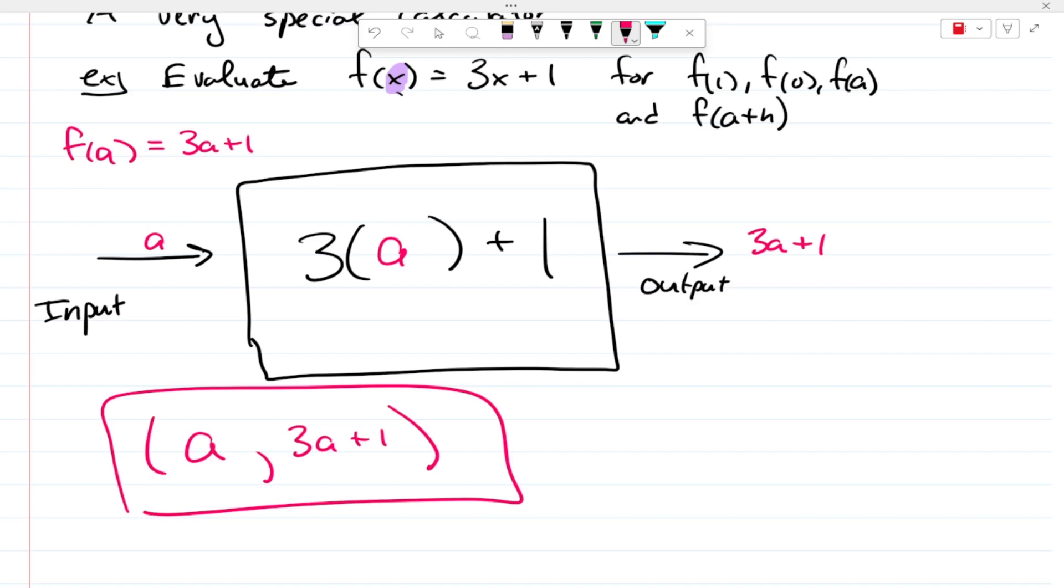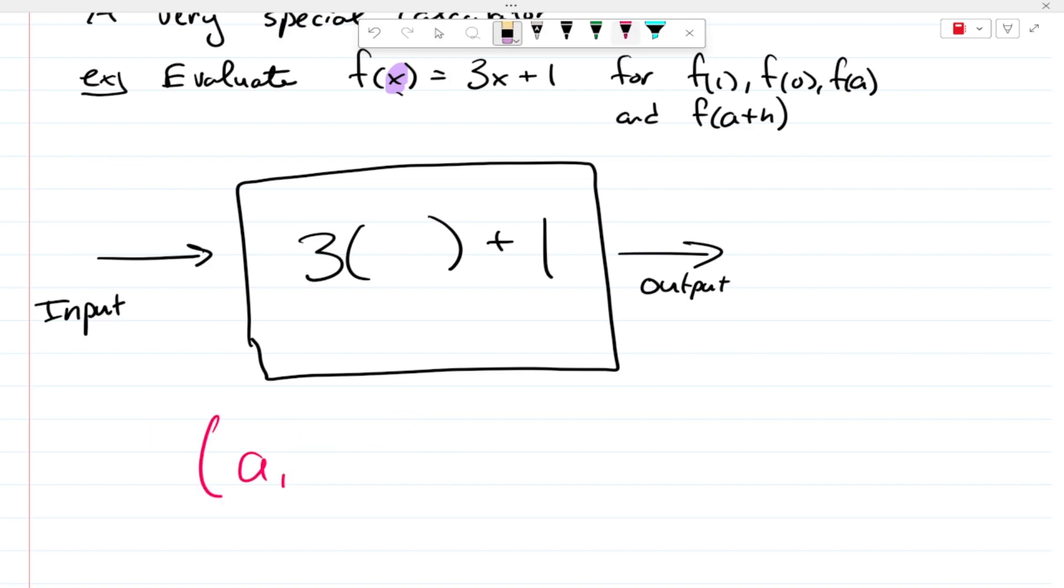Finally, we'll do the last one here. Sorry, I'm just erasing. We're going to do the input or the independent variable of a plus h. So, f of a plus h goes into the input and the calculator will, it'll output 3a plus 3h plus 1. It'll distribute it because it knows how to do that, but since it doesn't know what a nor h is, it just outputs it just like that. So, f of a plus h equals 3a plus 3h plus 1.